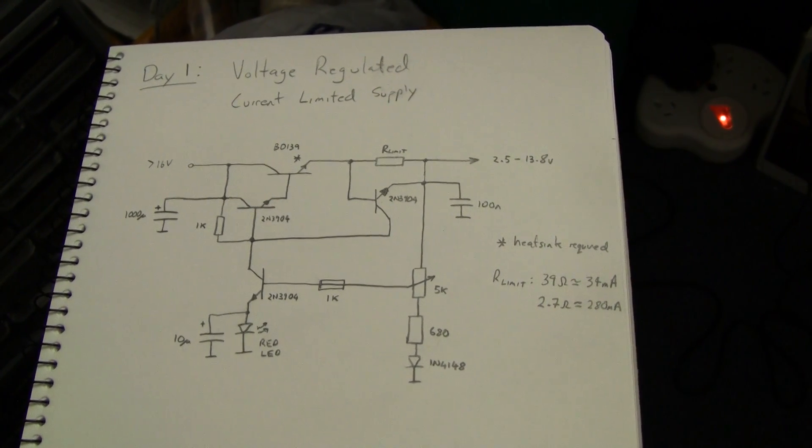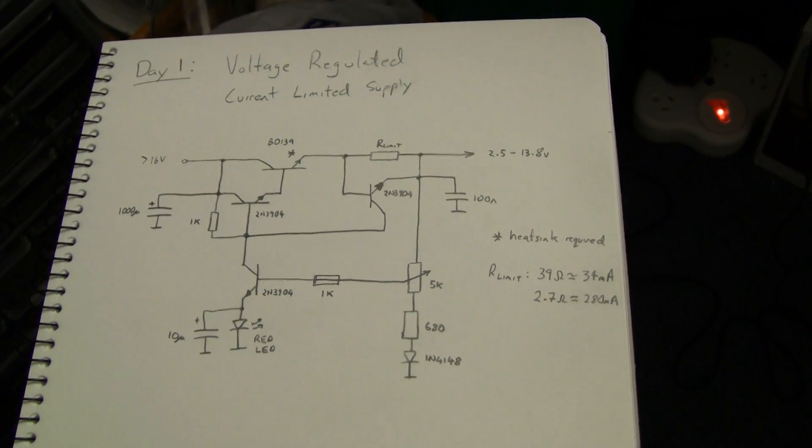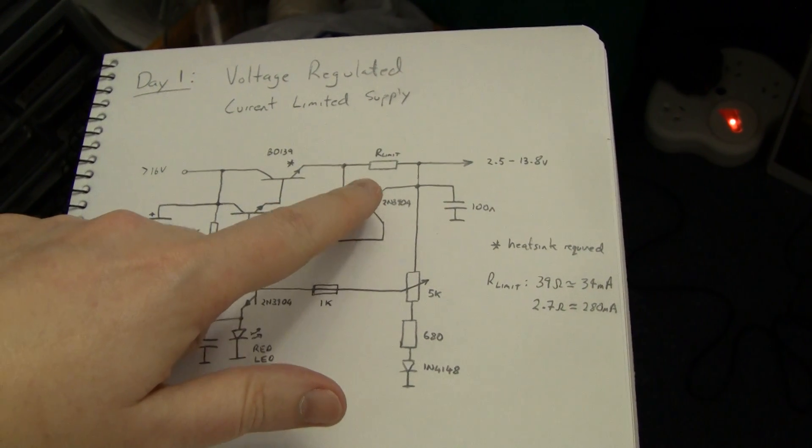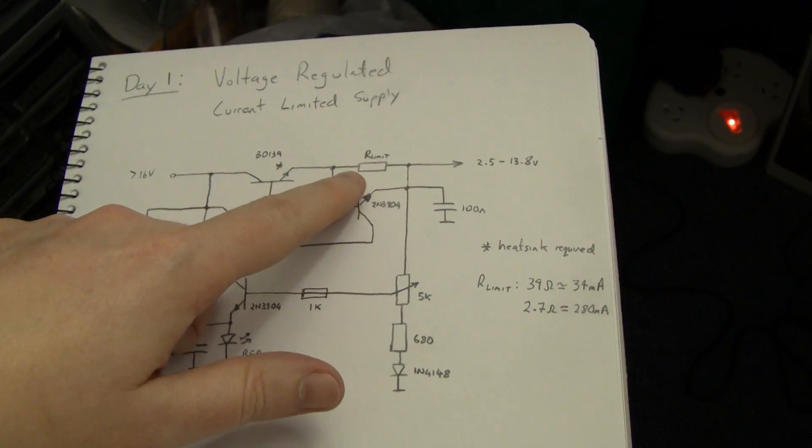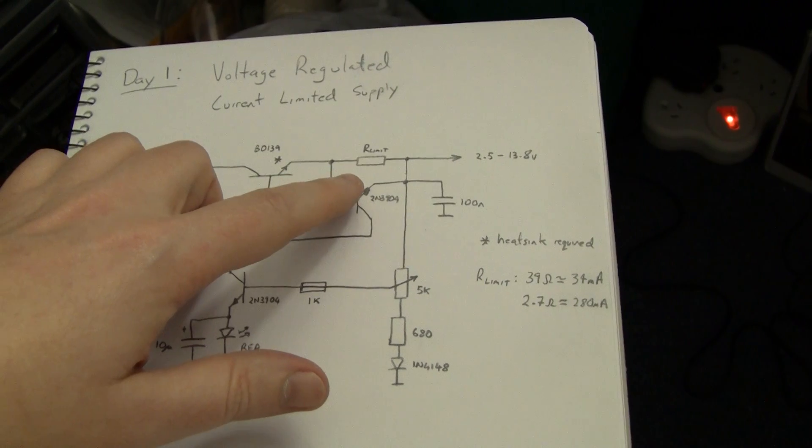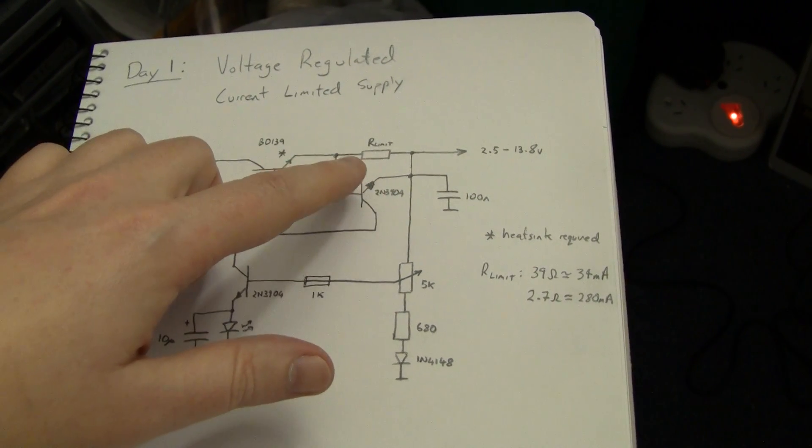It has a fixed current limit but I think if you build it for real you should probably make the limiting resistor switchable so that you could have about a 30 milliamp current limit and a couple hundred milliamp current limit.